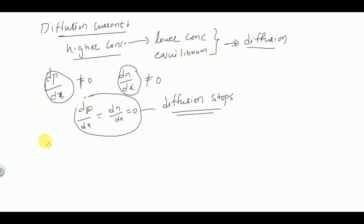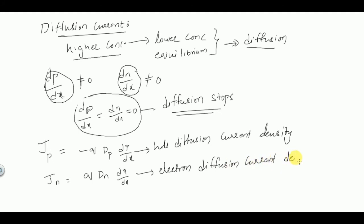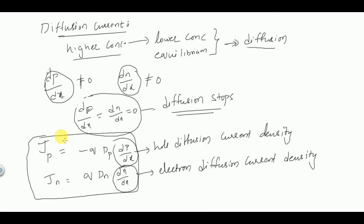The formulas for diffusion current density are: J_p = −qD_p · dp/dx for hole diffusion current density, and J_n = qD_n · dn/dx for electron diffusion current density. Here dp/dx is the hole concentration gradient, dn/dx is the electron concentration gradient, and D_p and D_n are the diffusion constants of holes and electrons respectively.